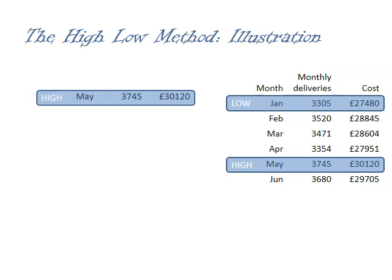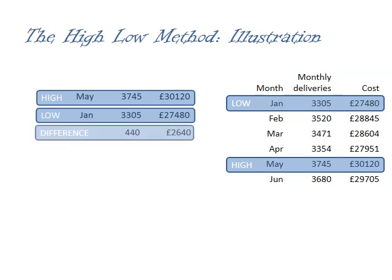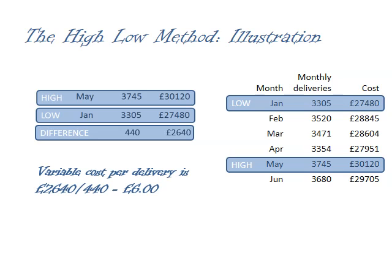I'm going to set up a table with my high values, then underneath my low values, and finally work out the difference — the difference between the number of monthly deliveries between the high and low values, as well as the difference in costs. There's a difference of 440 deliveries, and that costs £2,640. I can now use that information to calculate my variable cost per delivery: £2,640 divided by 440 units gives me a variable cost per delivery of £6.